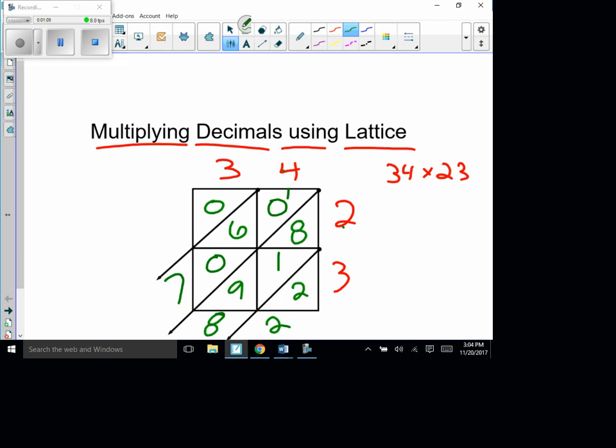So we have 2 and 8 plus 1 is 9, 9 plus 9 is 18, so put down the 8 and carry the 1 up there, and that's 7 and our answer would have been 782. Okay, so that's the old standard way, just do a basic multiplication with lattice. Today we're going to add a little extra into it, we're going to put some decimals in it.